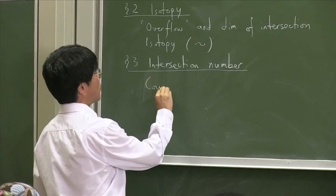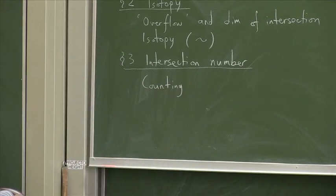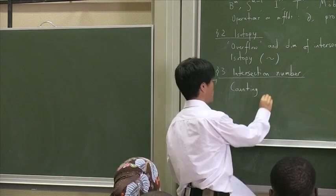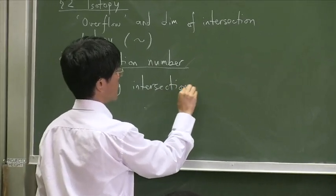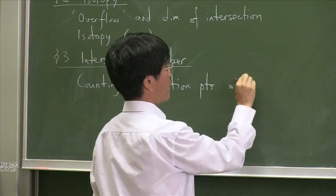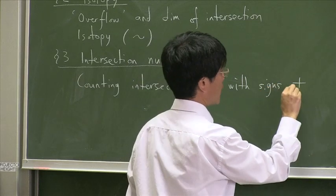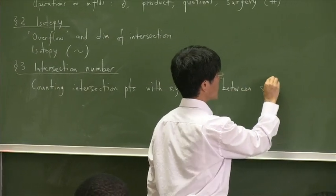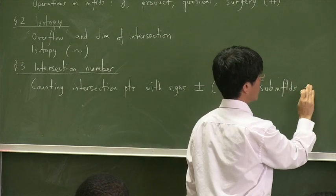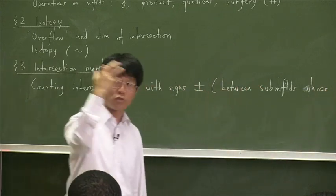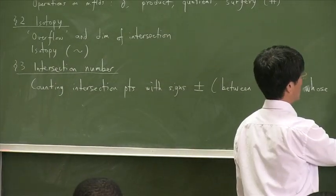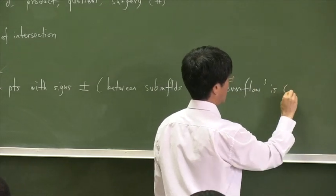The main idea was that you counted the number of crossings. But, not all intersections are counted plus one, some were counted plus one, some were counted minus one, depending on the orientation match or mismatch. So, counting intersection points with signs plus one, minus one, plus minus. And, this unit between submanifolds whose overflow is exactly zero, so that those two submanifolds meet, or intersect, in points. You remember this, I hope.